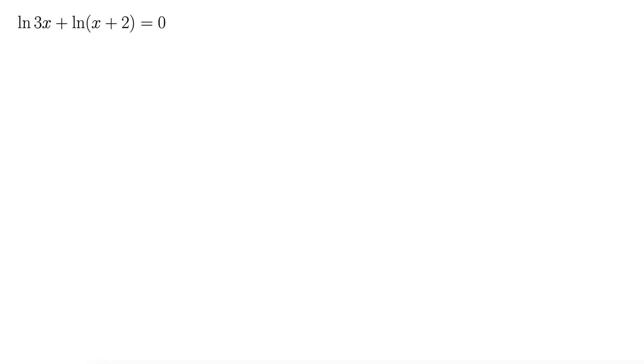Here we want to solve natural log of 3x plus natural log of quantity x plus 2 equals 0. The first thing we do is use the properties of logarithms to combine these natural logs. This is always the approach you take with these kinds of problems where you have separate natural logs added or subtracted together.